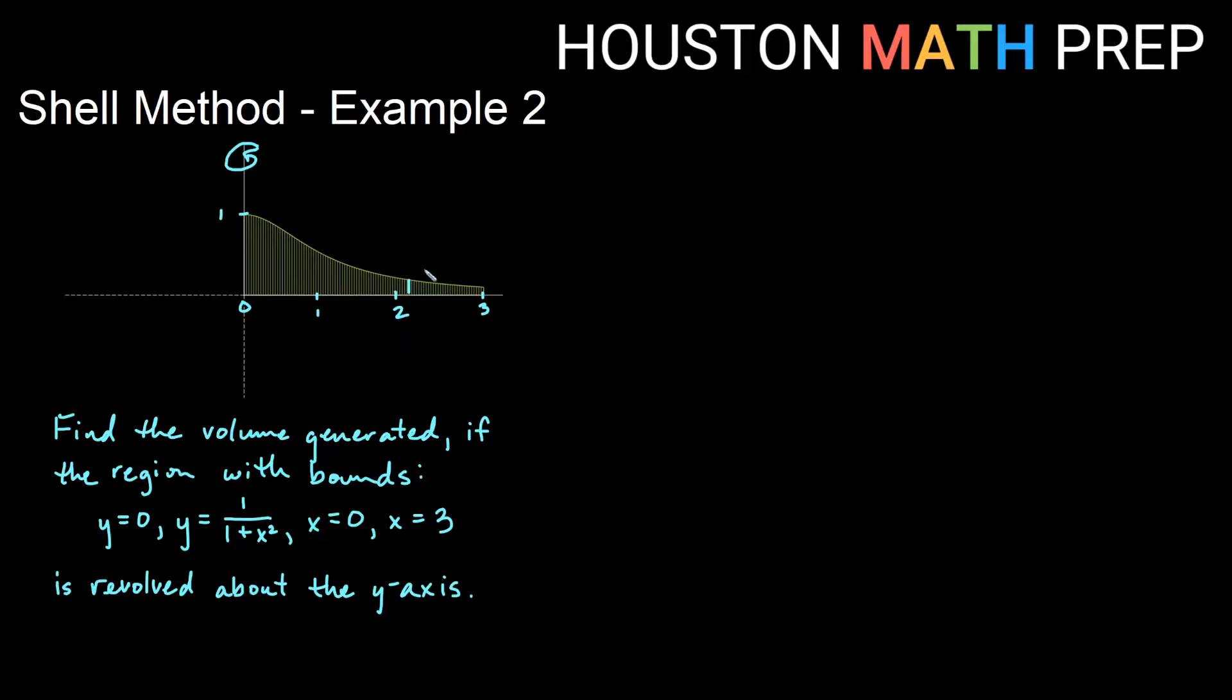We're going to figure out the volume based on our formula, two pi integral. Now, will it be x's or y's? Remember, you look at this vertical rectangle, and a vertical rectangle tells you we'll be integrating dx for this problem. So I will have some radius function in terms of x and some height function in terms of x, dx.